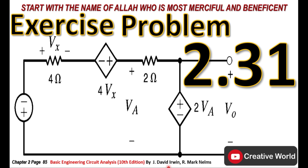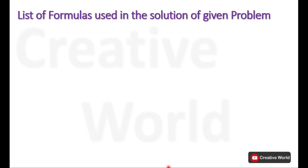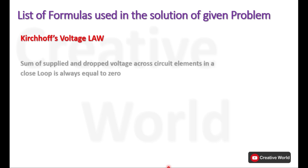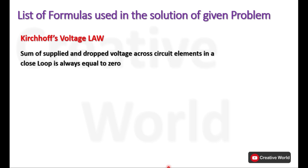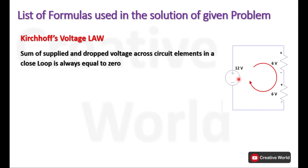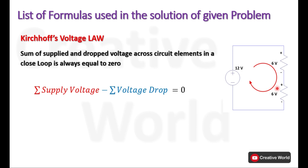Welcome to Creative World. In this video we will solve chapter 2, exercise problem number 2.31. While solving this problem we will be using Kirchhoff's Voltage Law. This law states that the sum of supplied and dropped voltage across circuit elements in a closed loop is always equal to zero. According to this law, the accumulative supplied and dropped voltage inside a closed loop is always zero.